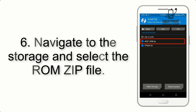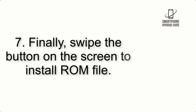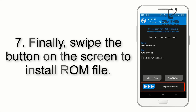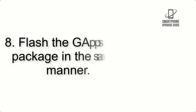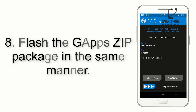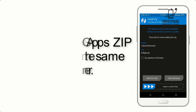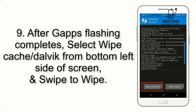Step 5: Go back to the recovery main screen and tap on the Install button. Step 6: Navigate to the storage and select the ROM zip file. Step 7: Finally, swipe the button on the screen to install the ROM.